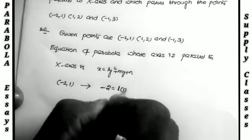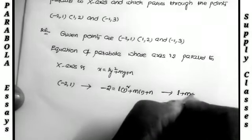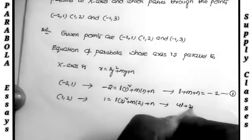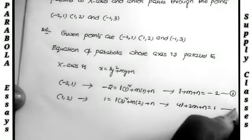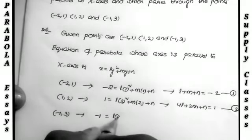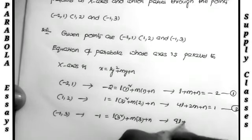Substituting the first point (−2, 1): x = −2, y = 1 gives l(1)² + m(1) + n = −2, so equation 1 is: l + m + n = −2. Substituting the second point (1, 2): x = 1, y = 2 gives l(2)² + m(2) + n = 1, so equation 2 is: 4l + 2m + n = 1. Substituting the third point (−1, 3): x = −1, y = 3 gives l(3)² + m(3) + n = −1, so equation 3 is: 9l + 3m + n = −1.